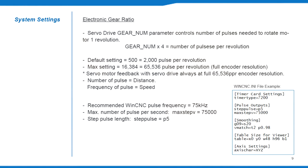We'll go over a few common interface settings between WinCNC and the servo drives. The first is the electronic gear ratio which controls the number of pulses needed to move the motor a certain distance. In the DYN servo drives, the gear num parameter multiplied by 4 is the number of pulses required to rotate the motor one full revolution.